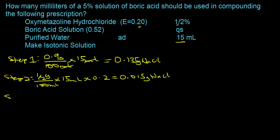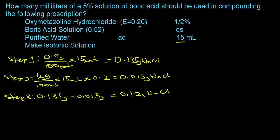The next thing you do in step three is subtract step two from step one. That's going to be 0.135 grams minus 0.015 grams, and that's going to be equal to 0.12 grams sodium chloride.